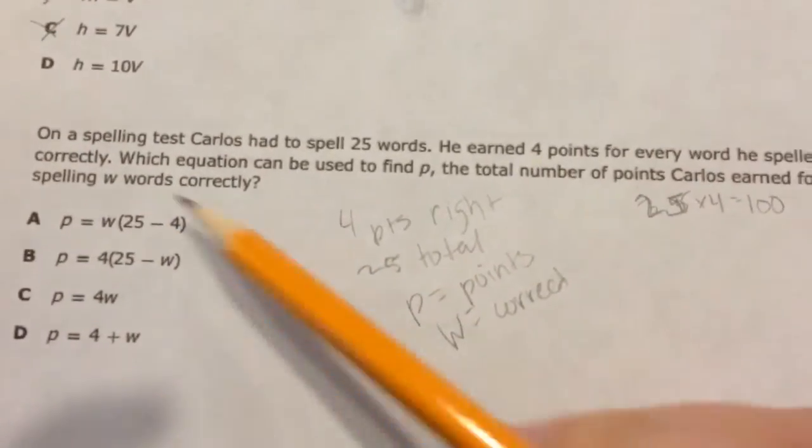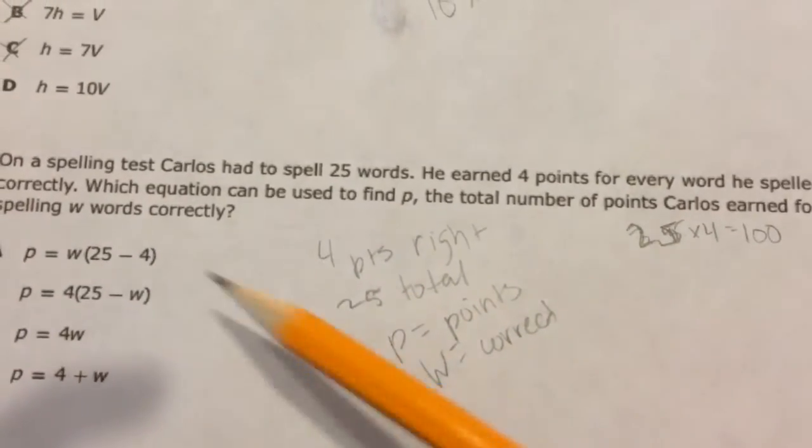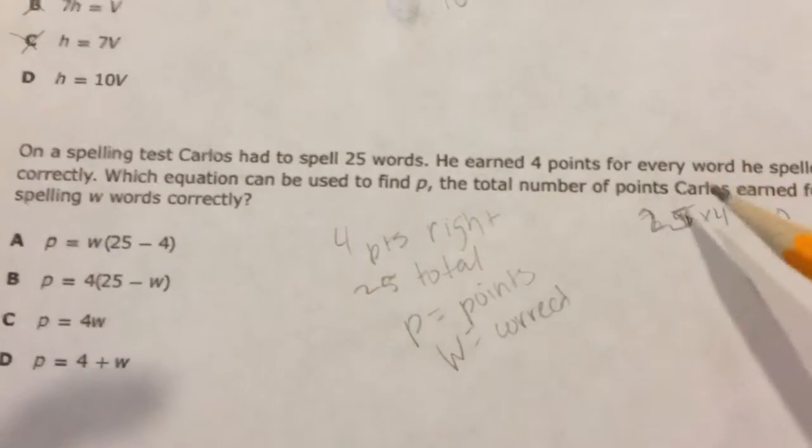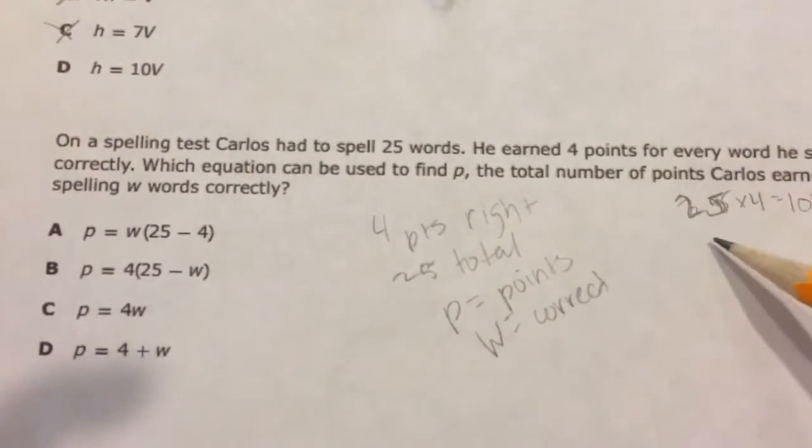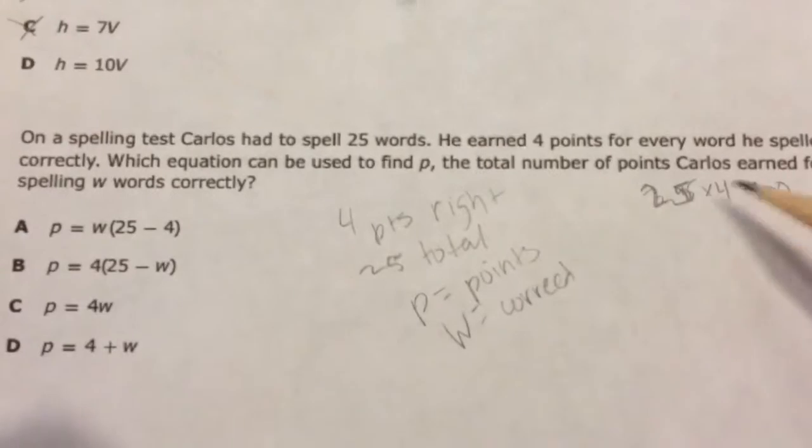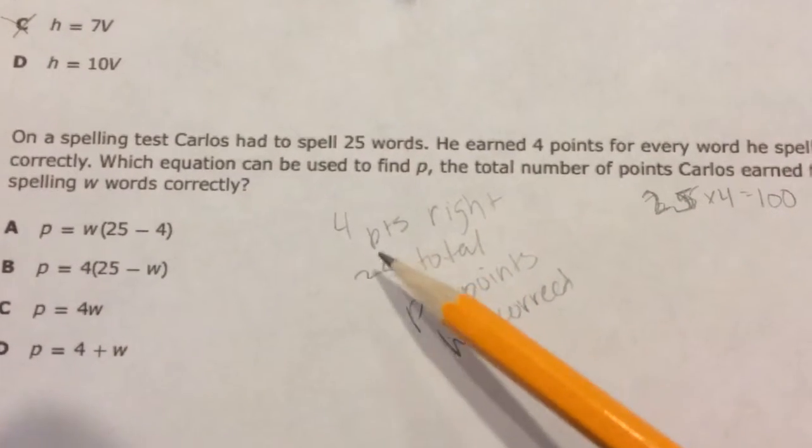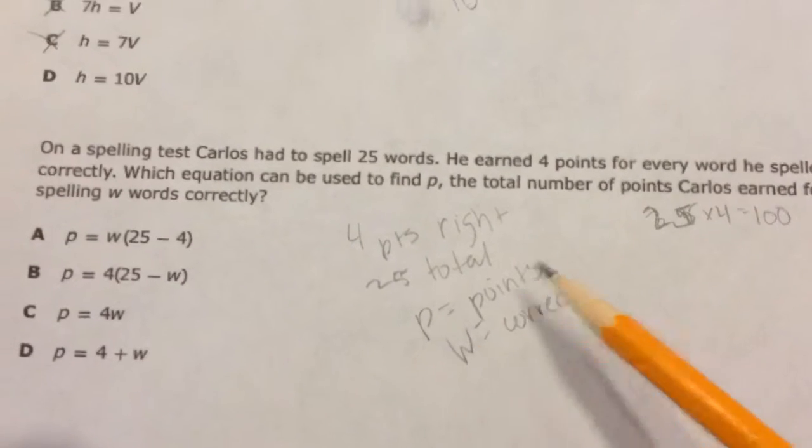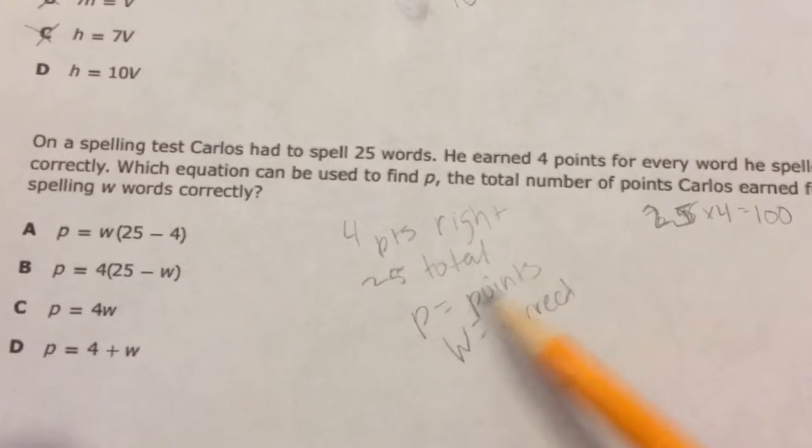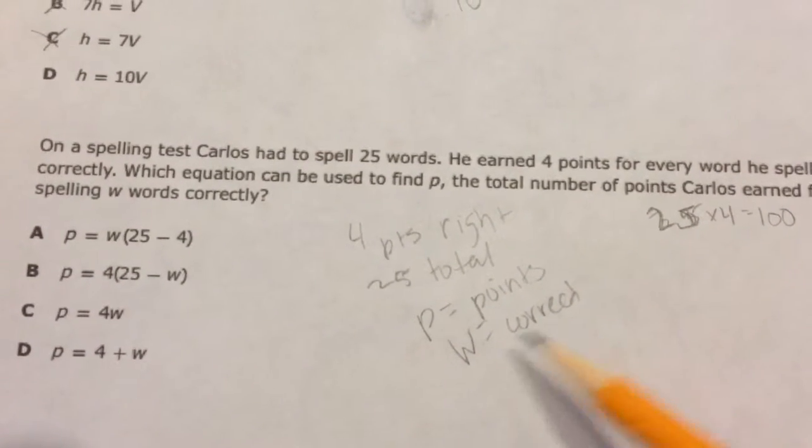But that doesn't seem to want to help me do anything. I don't think this helps me anywhere, so I'm going to leave it over there. Maybe I'll come back to it, maybe I won't. But at least I'm jotting down everything I can think. 4 points for every right question, there's 25 total. P is the points, that's his grade, that's what I want to know. And W is the one he got right.